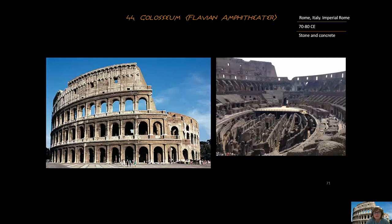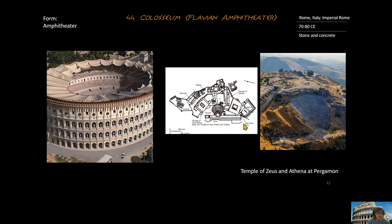This is the Colosseum, also known as the Flavian Amphitheater, after the Flavian line of Roman emperors. There are two images associated with this piece, both showing the decrepit view of the Roman Colosseum.